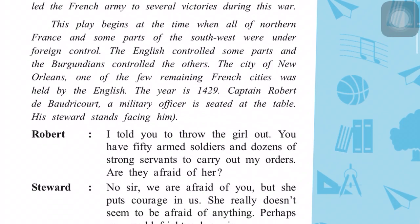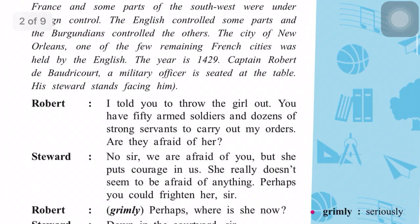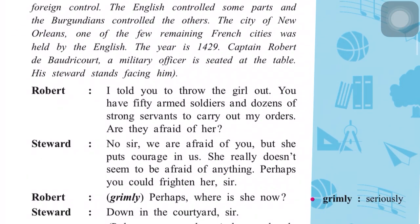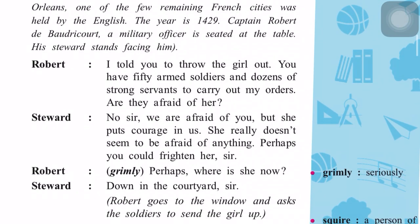Captain Robert de Baudricourt — we will just remember him as Captain Robert — is a military officer seated at the table. His steward, almost like an assistant or servant, stands facing him. They are giving us the scene right now: there is this military captain sitting at the table with his steward facing him.